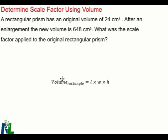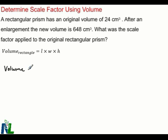To start, we know that the volume of a rectangular prism is given by length times width times height. So what I know to start is that the original volume was 24 cubic centimeters.